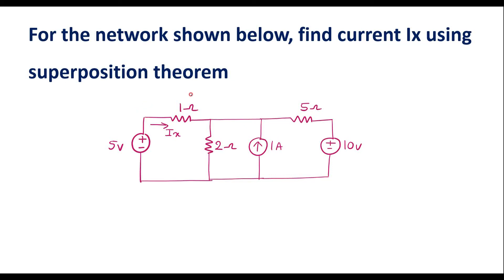In this video, I will consider one numerical on superposition theorem. For the network shown below, find current Ix using superposition theorem. This is the given circuit. Here we are supposed to find the current Ix which is flowing through the 1 ohm resistor using superposition theorem.